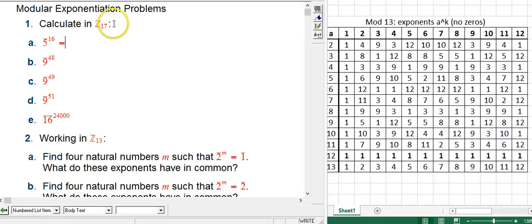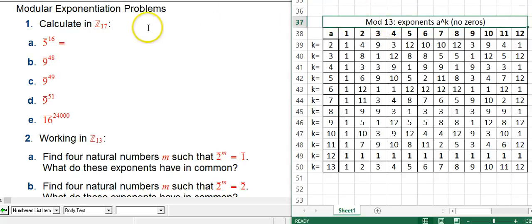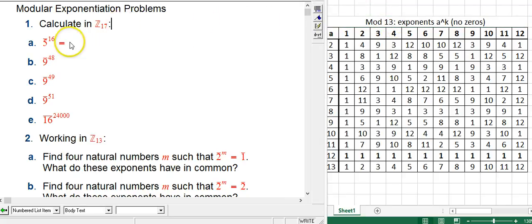First we're going to do one where we're in Z mod 17. We're not going to use this table quite yet over here, because that's mod 13. So Z mod 17, 5 with a bar because it's in Z mod 17, to the 16 written without a bar because we're thinking of it as an ordinary integer.